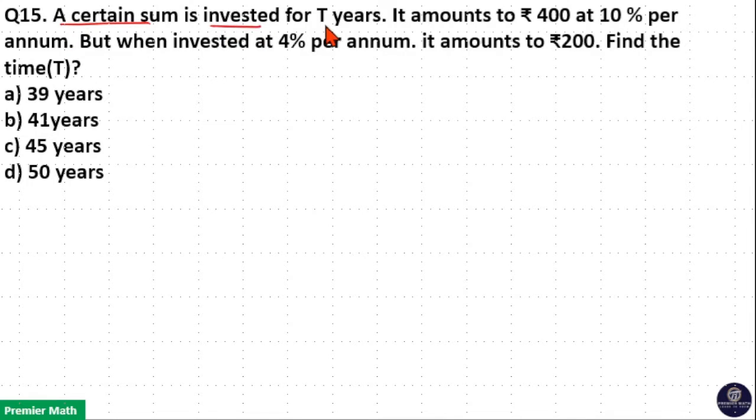A certain sum is invested for T years. It amounts to Rs. 400 at 10% per annum, but when invested at 4% per annum, it amounts to Rs. 200. Find the time.